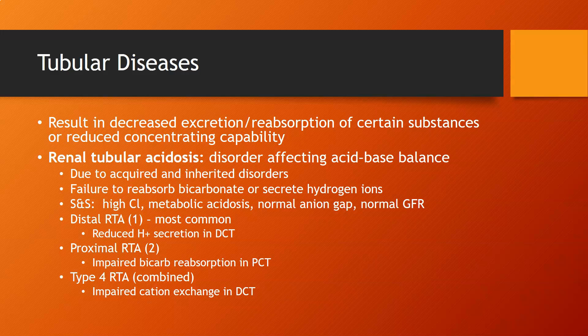Distal renal tubular acidosis involves reduced hydrogen ion secretion in the distal convoluted tubule. Proximal renal tubular acidosis, also known as Type 2 RTA, is an impaired bicarbonate reabsorption in the proximal convoluted tubule. Type 4 renal tubular acidosis is a combined acidosis problem involving impaired cation exchange in the distal convoluted tubule.